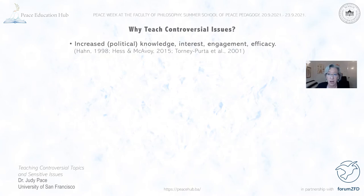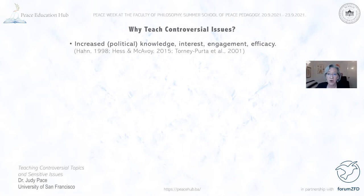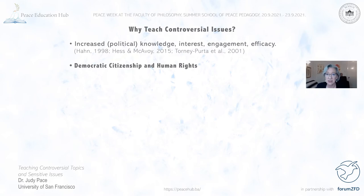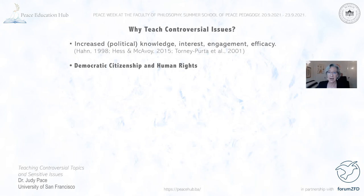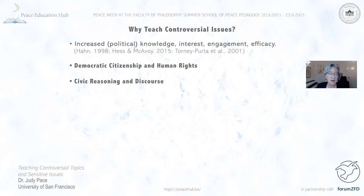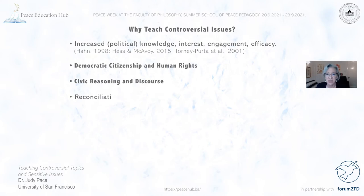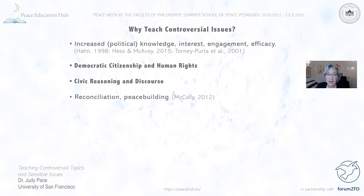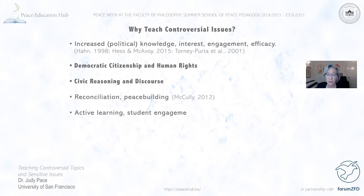We want to do everything we can in our schools to increase political engagement and also ensure that citizens are informed. Documents like the Democratic Citizenship and Human Rights professional development pack from the Council of Europe speak to the need to teach controversial issues for human rights and democratic citizenship. In the U.S., the National Academy of Education published a major report promoting civic reasoning and discourse across all subjects — not just history and social studies, but also English language arts, science, and even math. Others have talked about teaching controversial issues as a path to reconciliation and peace building, using pedagogies tied to active learning, student engagement, dialogue, and relevance.